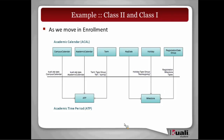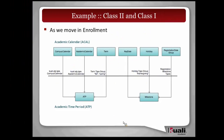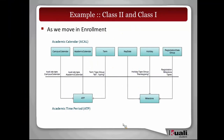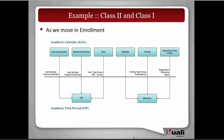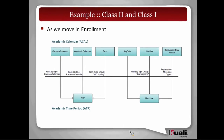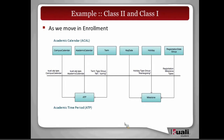Another one is academic time period. In R1, we only had the academic time period — we hadn't evolved to the academic calendar as a class two concept. An ATP, as it gets translated up into the class two service, could be a campus calendar, an academic calendar, a term — any framing of time within which you might drop others.